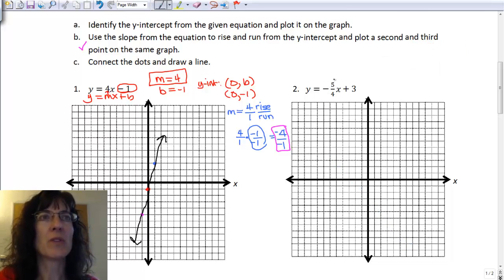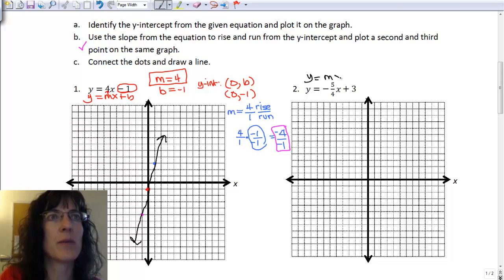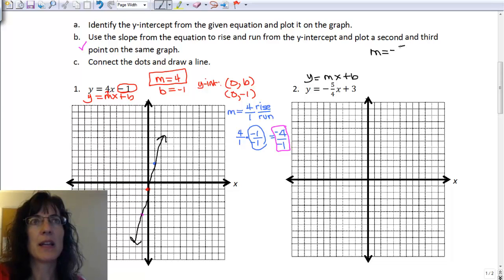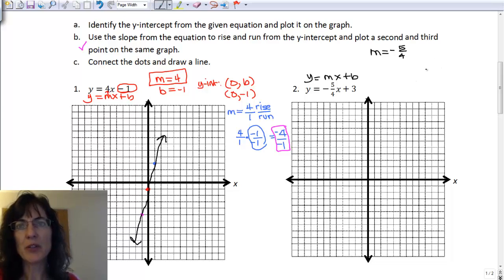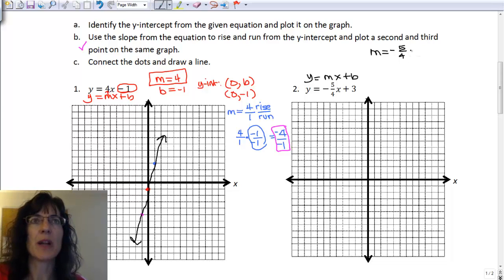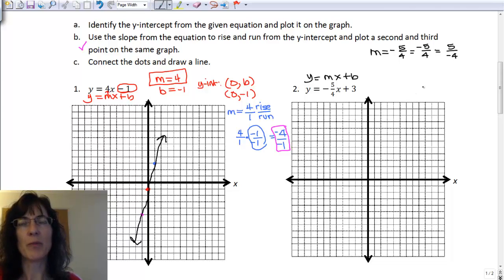Number 2, y equals negative 5 fourths x plus 3. I want to start off by figuring out what is my slope and what is my y-intercept. I'm thinking about y equals mx plus b in that form. My m is negative 5 fourths, and I want to think about that in two different ways. I can put the negative in the numerator or in the denominator, and it's the exact same thing. So I'll have negative 5 over 4, that's one form, and the other form is 5 over negative 4. My b is a positive 3, which means my y-intercept is 0 comma positive 3.